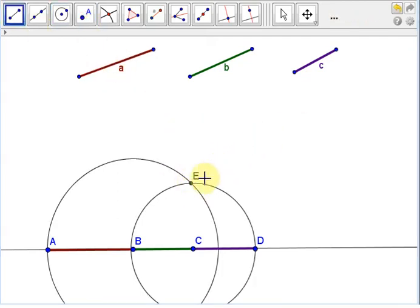And then we'll draw line segments from B to E and from C to E, and we claim that this triangle BCE has sides with lengths equal to the original given segments A, B, and C. To see why this is true: